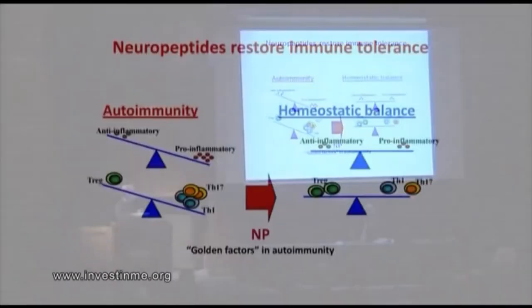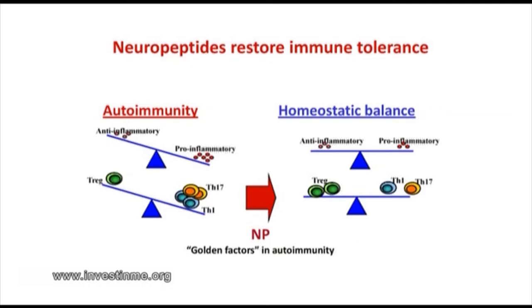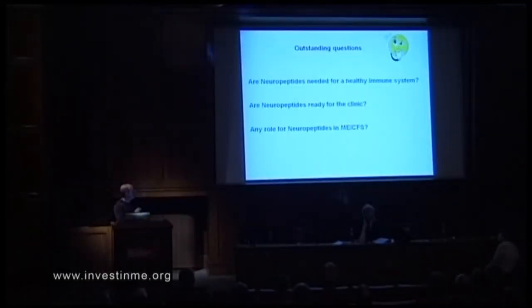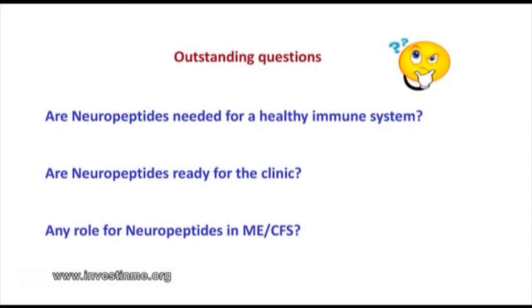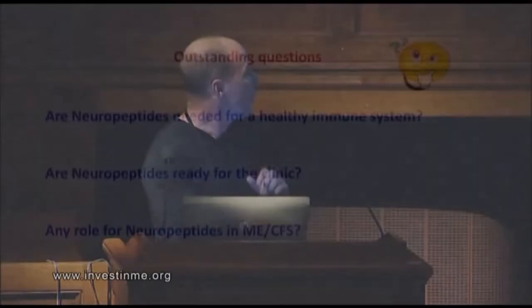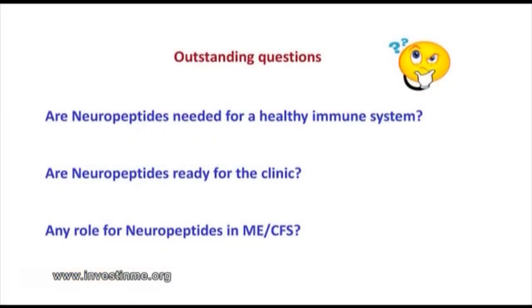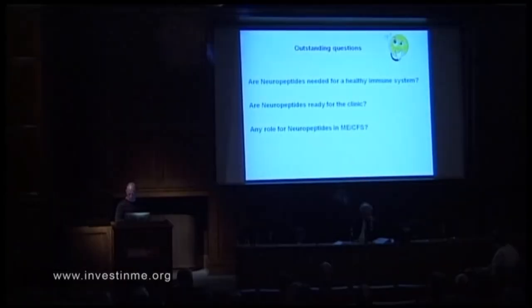We are probably dealing with one of the few factors that can convert the autoimmune situation back to homeostasis. We still have open questions: why, from a physiological point of view, do we need a healthy neuropeptide system to remain healthy? In other words, if this system is disrupted, are we more susceptible to autoimmune diseases? And are we ready for the clinic? And importantly, do we have any chance in ME/CFS?